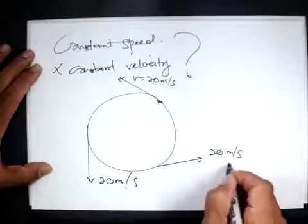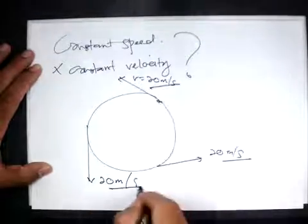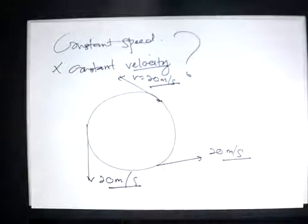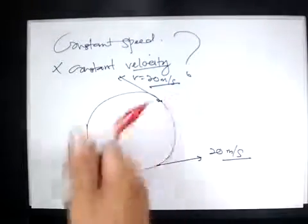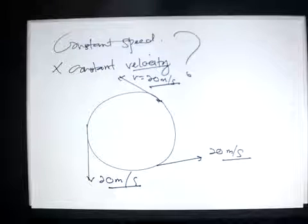Constant speed means at any point, let's say the V is 20 meters per second. You can see, this is speed 20, 20, 20. But velocity does change. This one to the left, this one downwards, this one to the right.